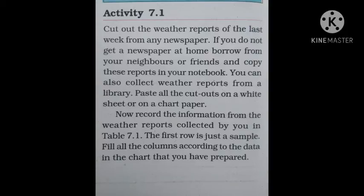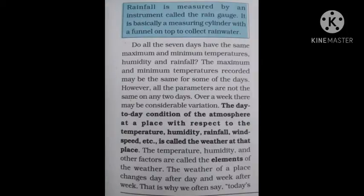As I showed in my last video, you need to make a weather report that includes maximum temperature, minimum temperature, minimum humidity, and maximum humidity, written date-wise. You have the same information to fit into the given columns. Rainfall is measured by an instrument called the rain gauge, which is basically a measuring cylinder with a funnel on top to collect rain water.